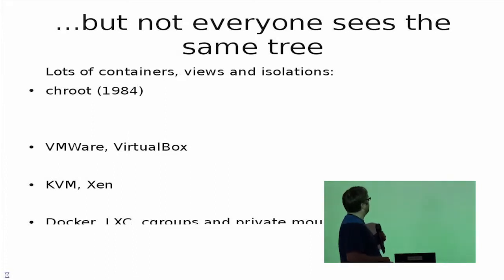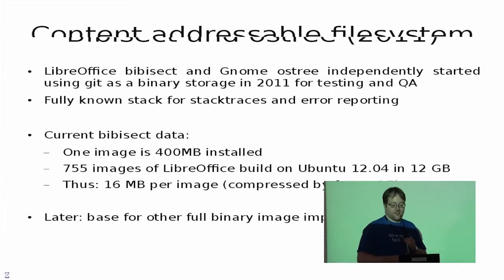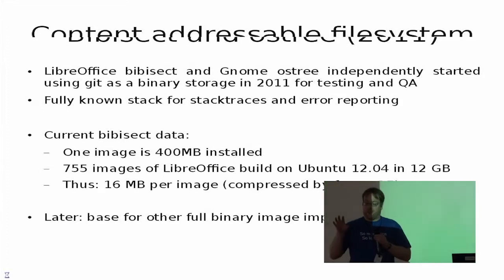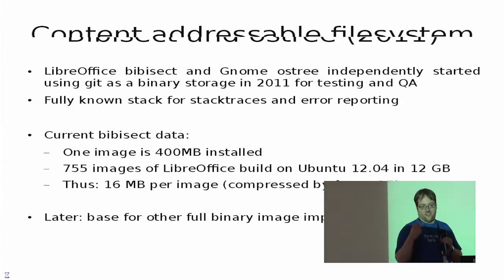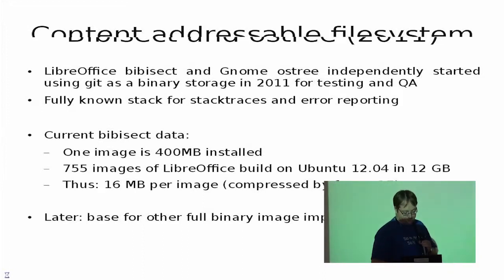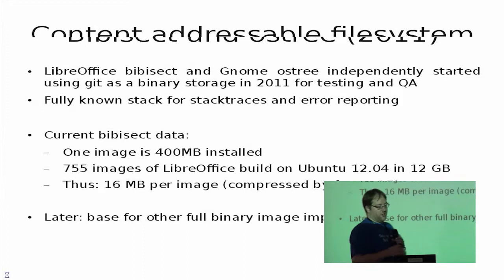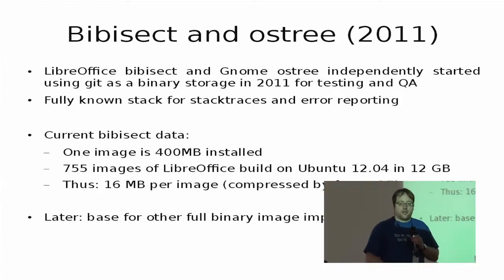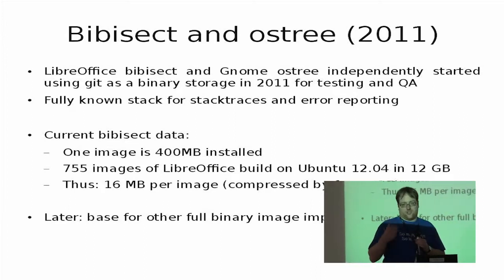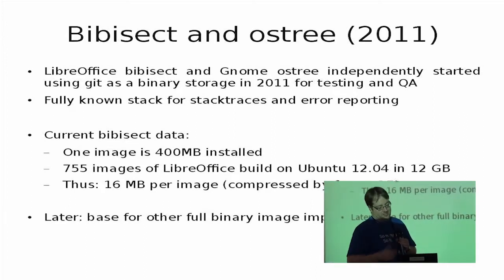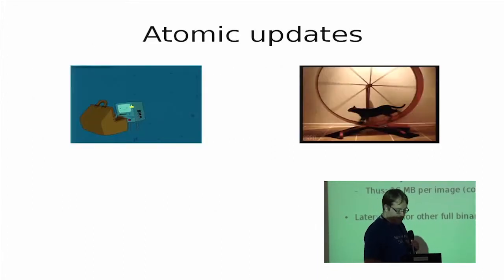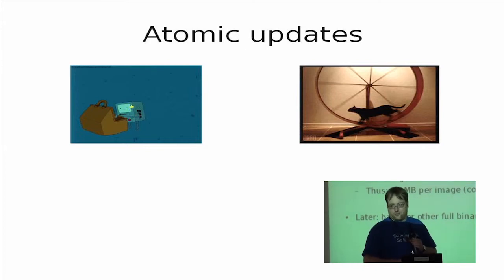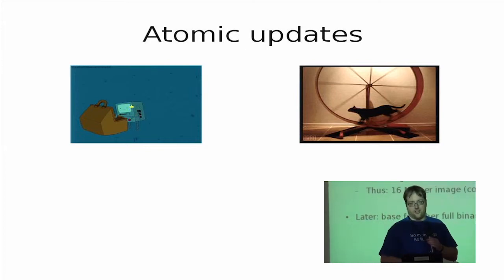We have Git, which is awesome and has versioning and is a content-addressable filesystem. The cool thing about that is that every object in the filesystem actually has a hash that identifies it uniquely. You can abuse Git quite easily — we did that with Bibasect and the GNOME guys did that with OS tree, where they put essentially the whole operating system in a binary repository. One might consider doing that for packages too, to deliver packages like that.